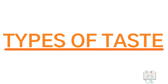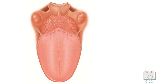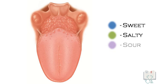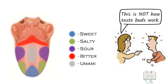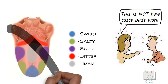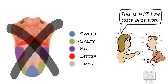Regarding types of taste, the classical view states that there are five primary taste sensations — sweet, salty, sour, bitter, and umami — which are perceived in different parts of the tongue. However, many researchers believe that taste cannot be broken down into categories on a tongue map and is more of a spectrum.